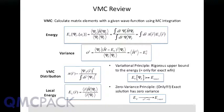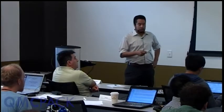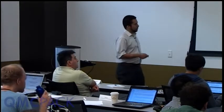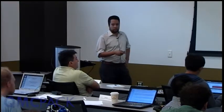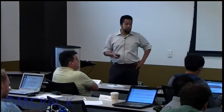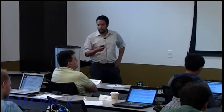If we define the local energy as the Hamiltonian applied to the trial wave function divided by the wave function itself, you can multiply and divide by the wave function to get an integral where the expectation value of the Hamiltonian is just a simple average of the local energy multiplied by a distribution function. In VMC, this distribution function is the square modulus of your trial wave function, normalized. To do VMC, all we need to do is sample this distribution using Langevin acceleration or simple Metropolis random moves, and then accumulate values of the local energy along the way.